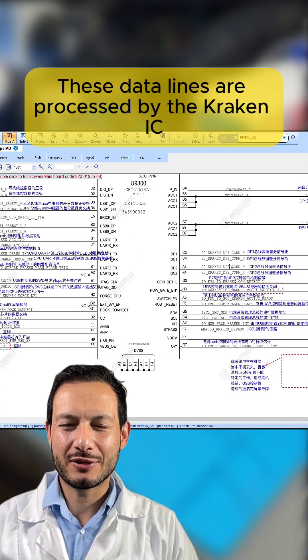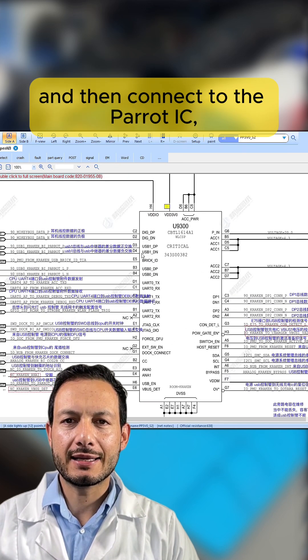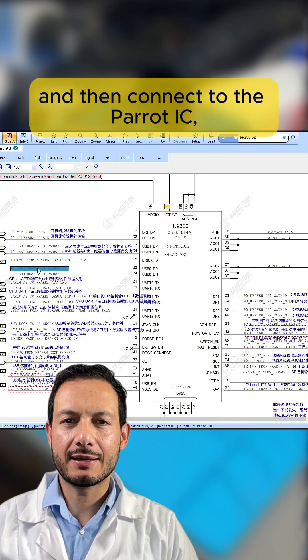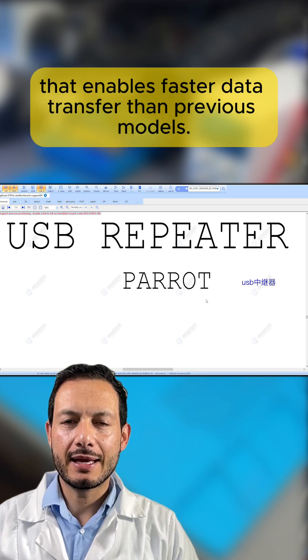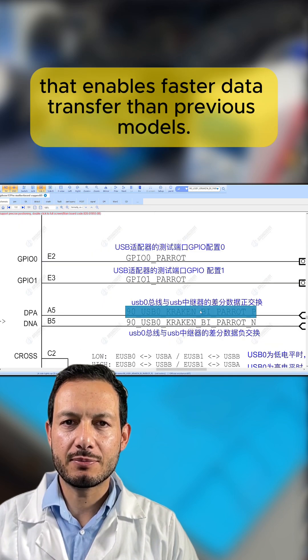These data lines are processed by the Kraken IC and then connect to the Parrot IC, a USB repeater that enables faster data transfer than previous models.